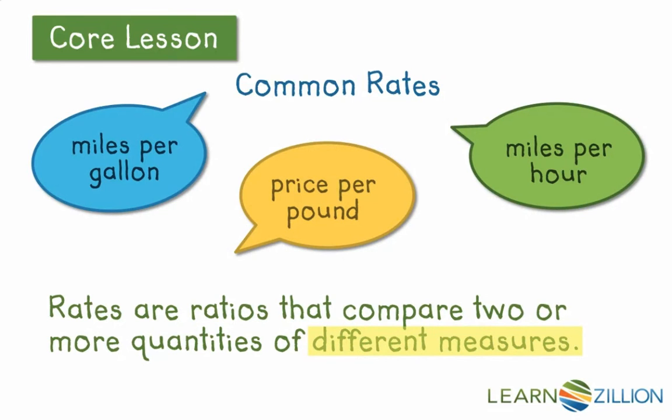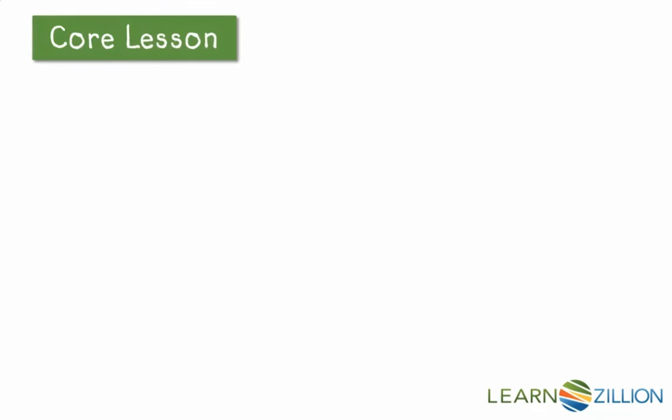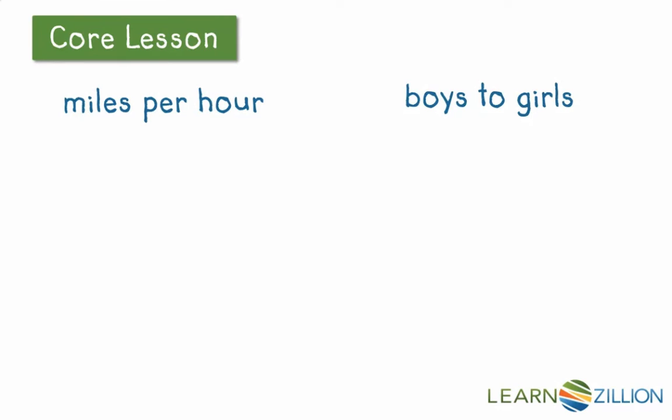It's this idea of different measures that sets rates slightly apart from the normal ratios we're used to seeing. But what does it mean to have a different measure? If I look at miles per hour and boys to girls, at first glance they both look like different measures to me. Miles are different than hours, and boys are definitely different from girls. So why is one considered a rate and the other considered a ratio?